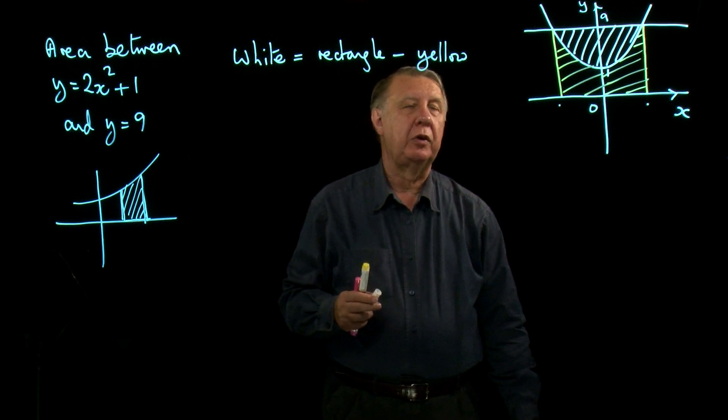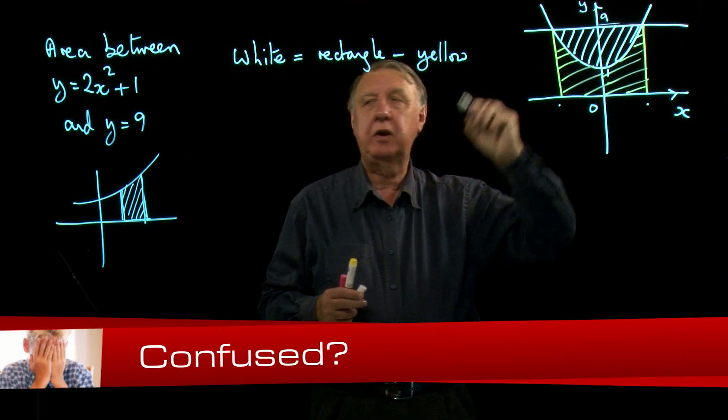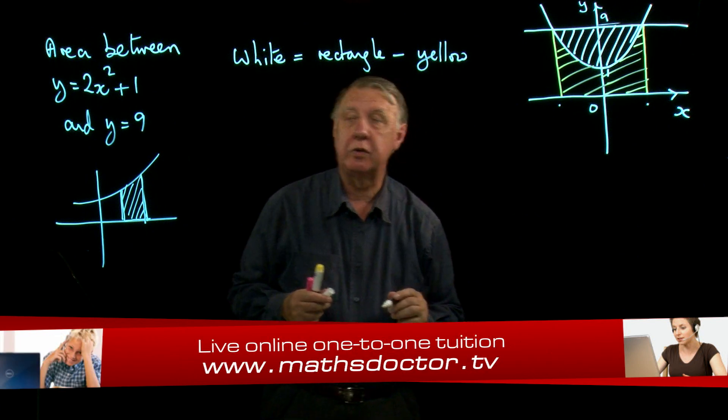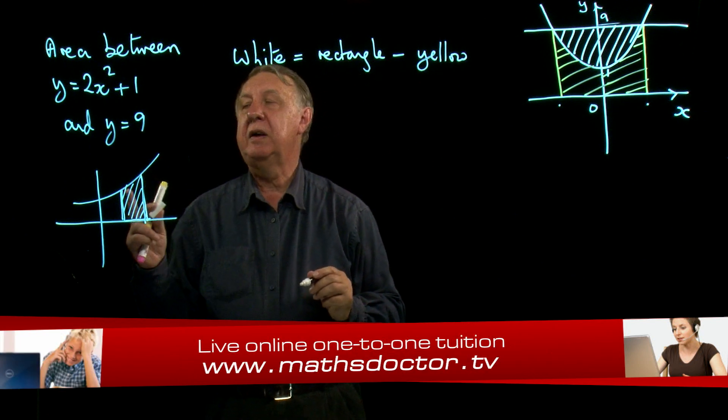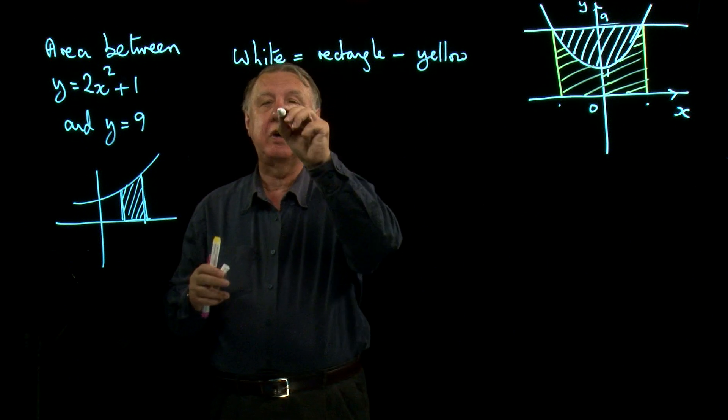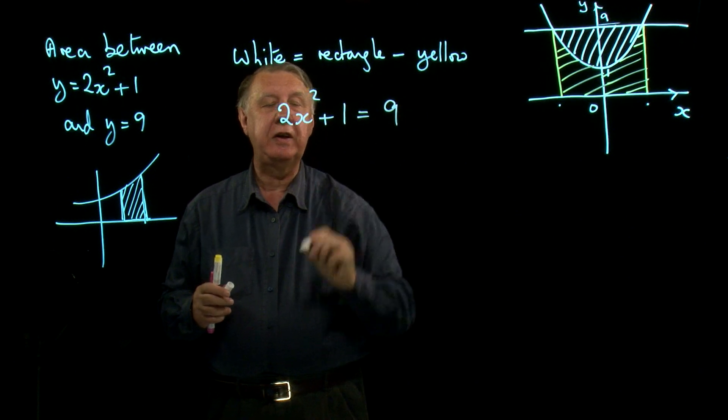But where do they come from? They come from this line meeting this curve. So I need to solve simultaneously those two equations. And you remember the easy type when they're both y equals, it's easy. You just simply put both expressions equal to each other.